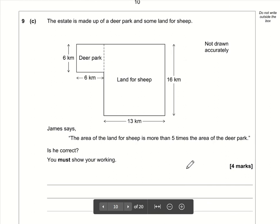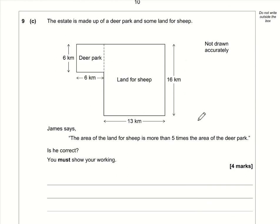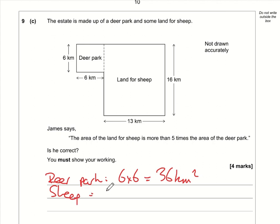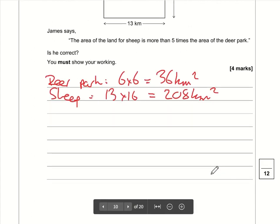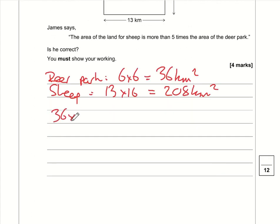Part c: James says the area of land for sheep is more than 5 times the area of the deer park. The deer park area is 6 × 6 = 36 km². The sheep area is 13 × 16 = 208 km². Is 208 more than 5 × 36 = 180? Yes, 208 > 180, so James is correct.